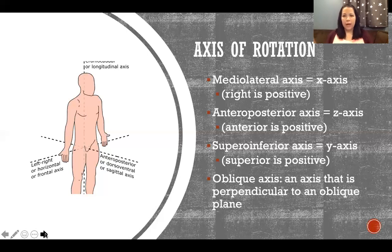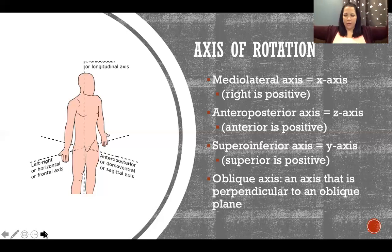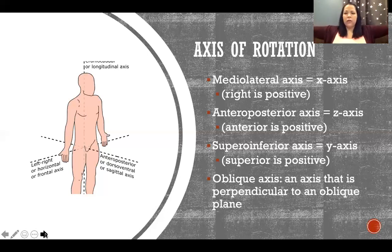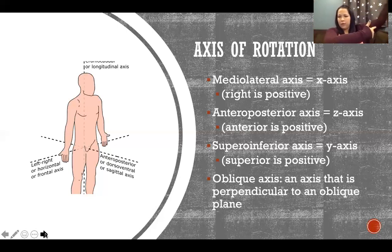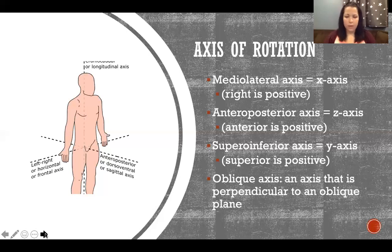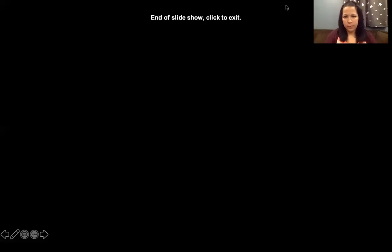But if my glenohumeral joints are abducted — arms out to the side — and I flex and extend my elbows, that's no longer sagittal plane motion and no longer the medial-lateral axis. Now that flexion and extension is happening in the frontal plane around the anteroposterior axis, just like the adduction and abduction was happening. We'll talk about this lots more — let me know if you have questions when we see each other, virtually or in class. Bye!